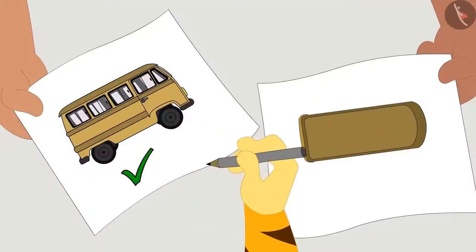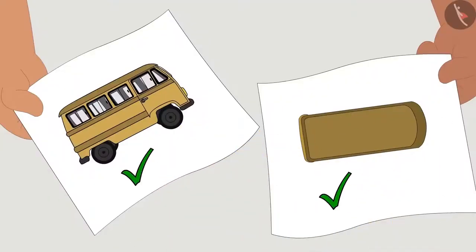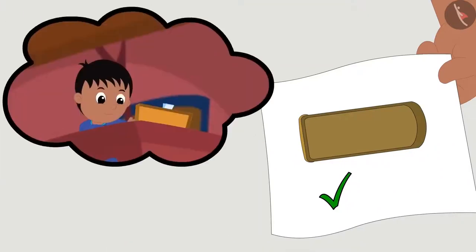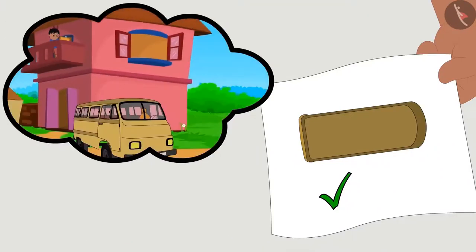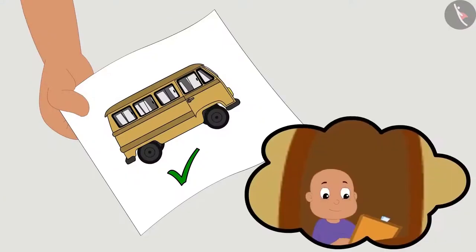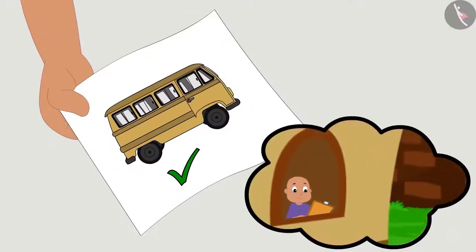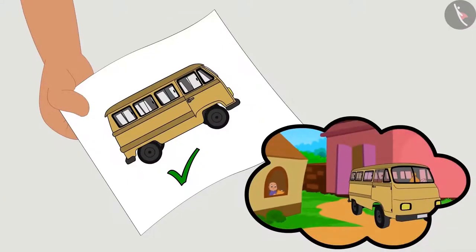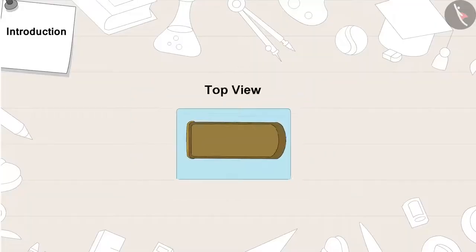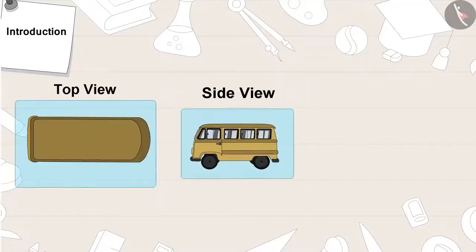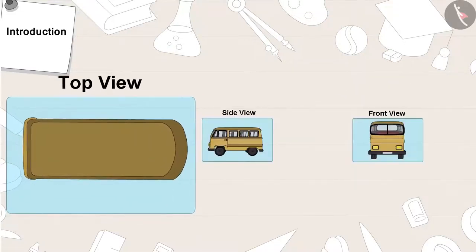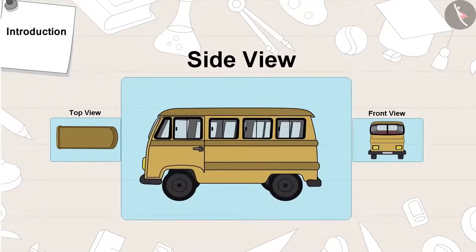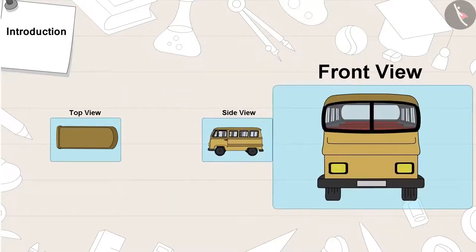In fact, the drawings of both Raju and Bablu are correct. Raju had drawn the top view of the bus, whereas Bablu saw the bus from the side while drawing it. All objects can be viewed from three different sides: from above — that is top view — side view, and front view.